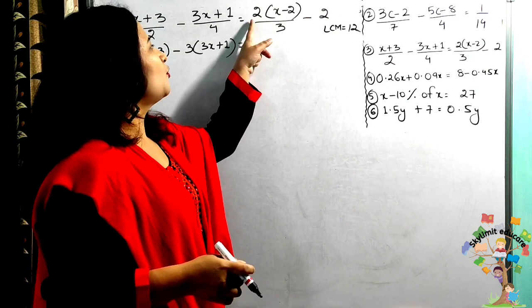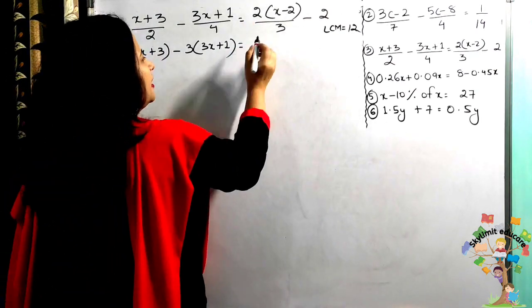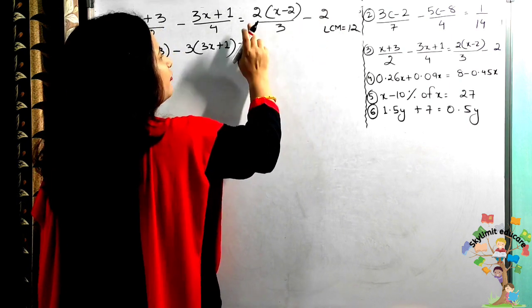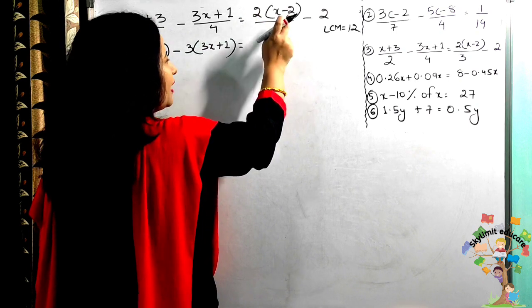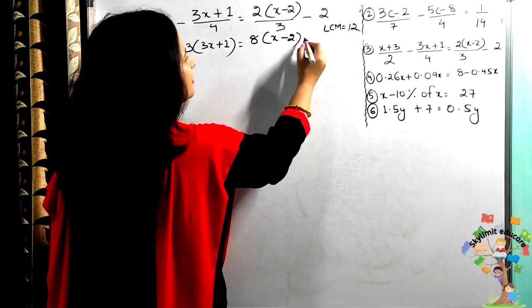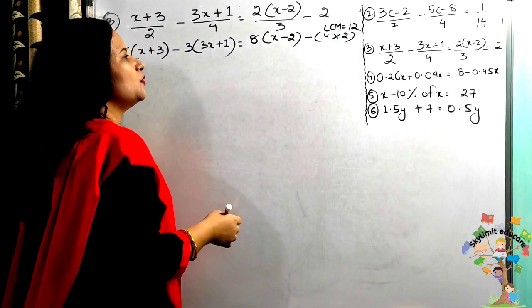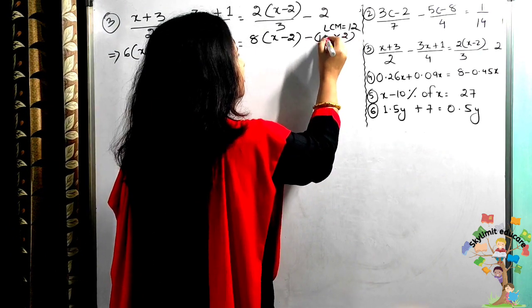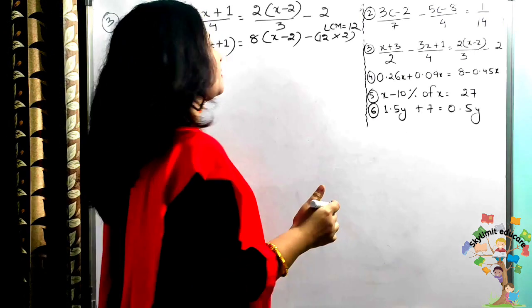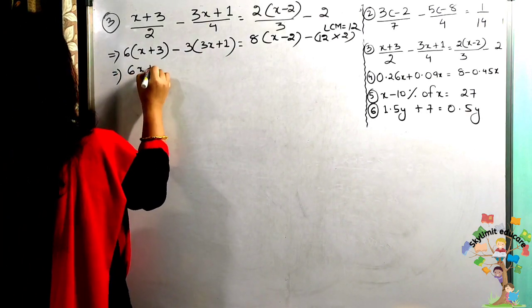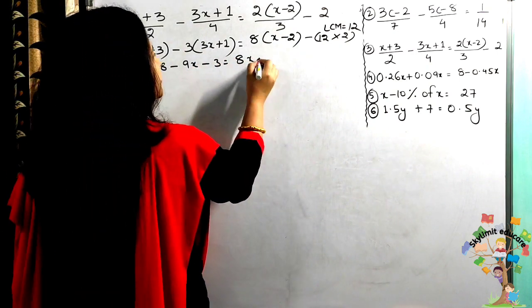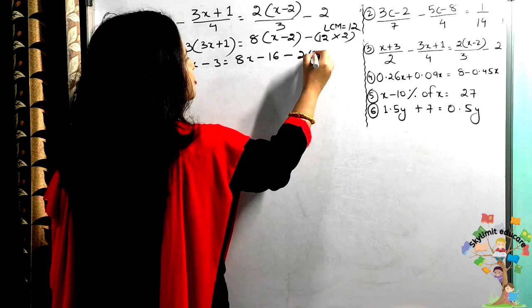The last term: LCM is 12, and 2 is the numerator with denominator 1, so 12 × 2 = 24. Now expanding: 6x + 18 − 9x − 3 = 8x − 16 − 24.